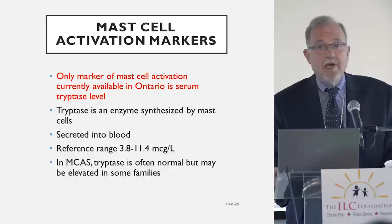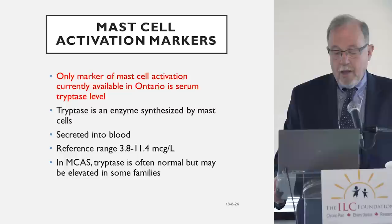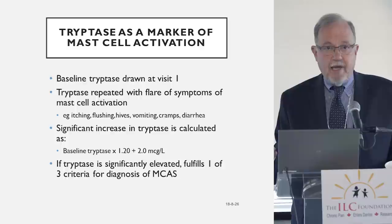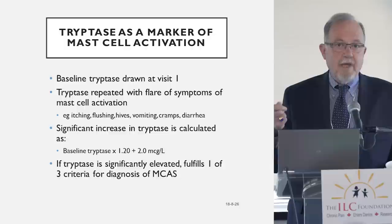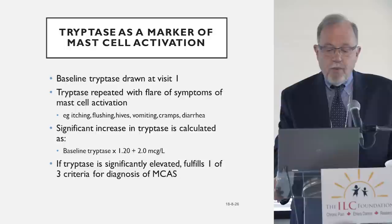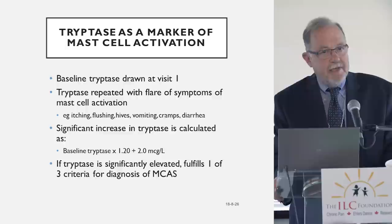Tryptase will be normal in somebody with mast cell activation syndrome, especially when they're not very highly symptomatic. So what we'll do is get a baseline tryptase level when somebody's feeling relatively okay, then give them another requisition to repeat their tryptase level when they're experiencing those symptoms referable to mast cell activation. We ask them to repeat that tryptase level when they're really symptomatic, and then we look for a significant rise in tryptase in the blood.